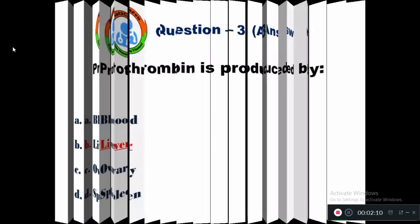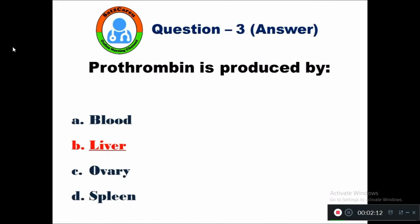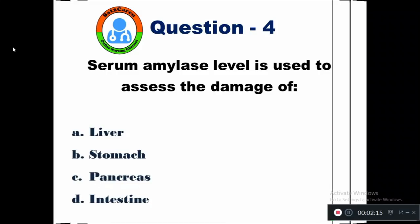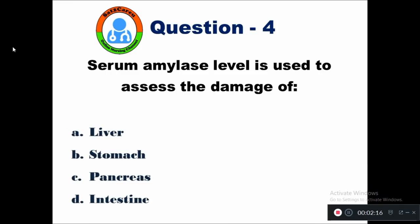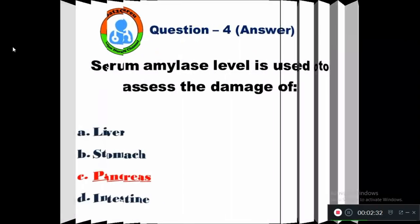Prothrombin is produced by the liver. Let's move on to question 4: Serum amylase level is used to assess the damage of — option A liver, B stomach, C pancreas, D intestine. Serum amylase level is used to assess the damage of the pancreas.